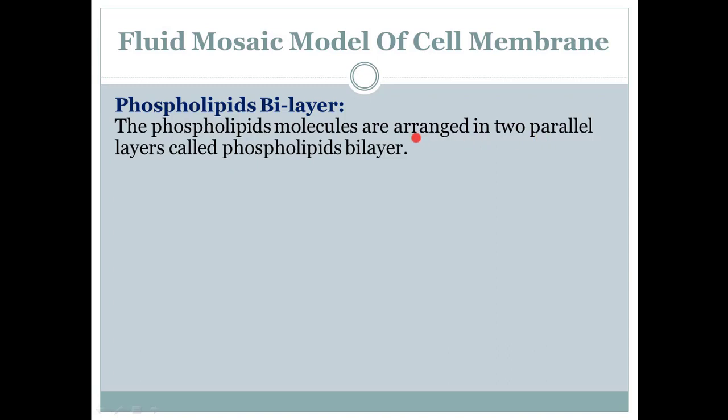They are arranged in this way and these two parallel layers are called phospholipids bi-layer. Bi-layer. I repeat, bi means two and layers means layers or levels.